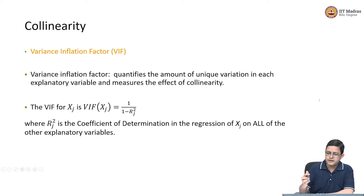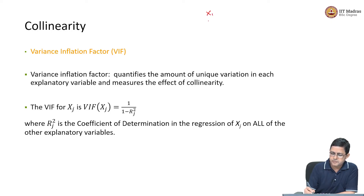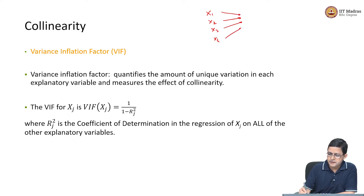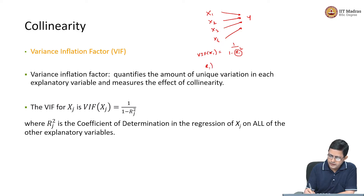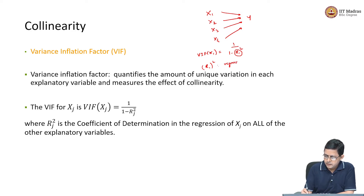To illustrate: suppose there is a multiple linear regression where the explanatory variables are x1, x2, x3, x4 and we are studying the impact on response variable y. The VIF of x1 will be 1 over (1 minus R1²), where R1² is the coefficient of determination in a regression where x1 is the response variable and x2, x3, x4 are the explanatory variables.